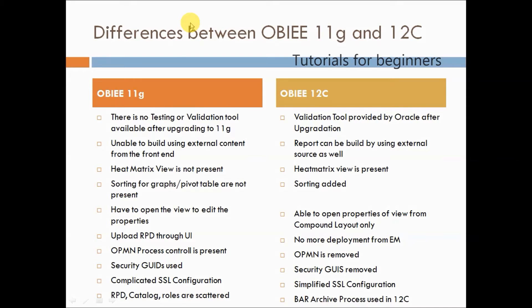There is no OPMN process in 12c. Earlier, GUIDs were present in 11g, so whenever you were moving files, every file had a GUID associated with it. Sometimes the system would not be able to find the exact path or a folder was missing, and we would have to go and refresh all the GUIDs present in OBIEE to solve the issue. In 12c, those security GUIDs have been removed completely.